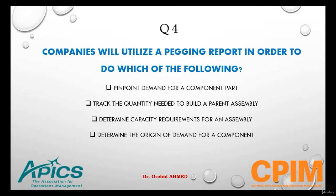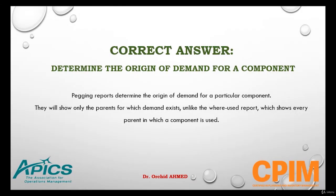Question 4. Companies will utilize a pegging report in order to do which of the following? Pinpoint demand for a component part; track the quantity needed to build a parent assembly; determine capacity requirements for an assembly; or determine the origin of demand for a component. The pegging report is used for determining the origin of demand for a component. It shows only the parents for which demand exists, unlike the where-used report which shows every parent in which a component is used.